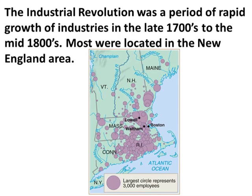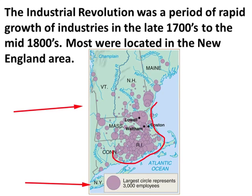The Industrial Revolution was a period of rapid growth of industries in the late 1700s to the mid-1800s. Most were located in the New England area. If you look at this visual and notice the key, you see this large purple circle, which signifies 3,000 employees in a particular area. Notice how concentrated these purple circles are in the New England area — it shows that tens of thousands of Americans worked in factories during the Industrial Revolution.